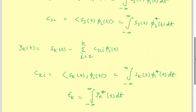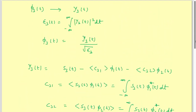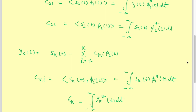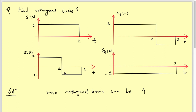We will now solve a problem to understand this through an example. We have four signals: s1(t), s2(t), s3(t), and s4(t). So we can have four orthogonal basis functions or fewer. The maximum number of orthogonal basis functions is four, but it can be less than that.